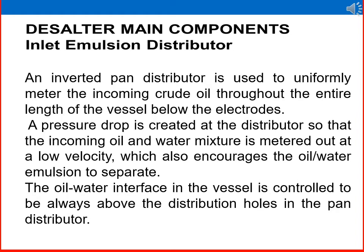The main components of the desalter: the inlet emulsion distributor is used to uniformly meter the incoming crude oil throughout the entire length of the vessel, below the electrodes. A pressure drop is created at the distributor so that the incoming oil and water mixture is metered out at a low velocity, which also encourages the oil and water mixture to separate. The oil-water interface in the vessel is controlled to be always above the distribution holes in the pan distributor.